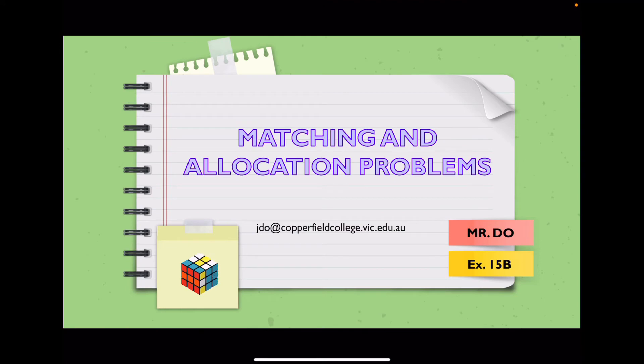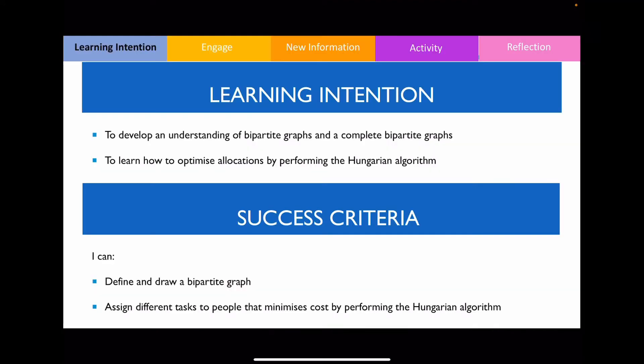Hello class. In this video we're going to be looking at matching and allocation problems. The learning intention of this video is for us to develop an understanding of bipartite graphs and a complete bipartite graph, and for us to learn how to optimize allocations by performing the Hungarian algorithm.